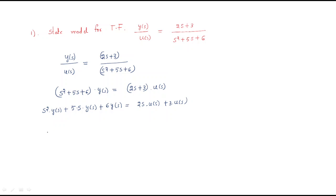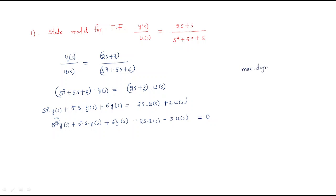This is the single equation. If you observe here, the maximum degree is 2, so we have 2 state variables. We assume x1 and x2. Now we go for the state transition matrix A. For a 2×2 matrix, the first row is simply [0, 1].